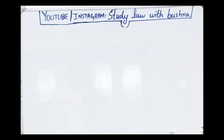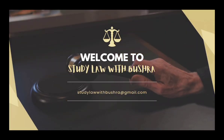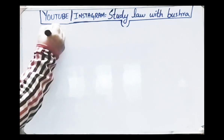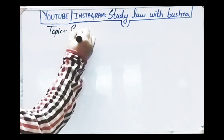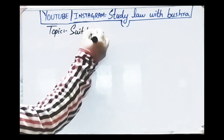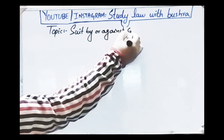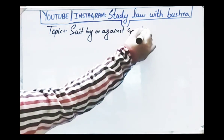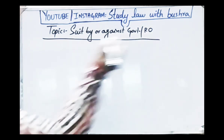Assalamualaikum viewers and welcome back to my channel Study Law with Bushra. We were discussing Civil Procedure Code 1908. We have discussed up till section 78. In this video we are going to discuss the topic of suit by or against the government or public officer.